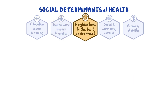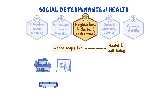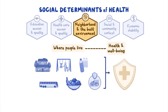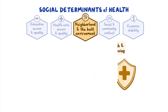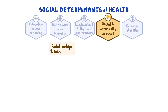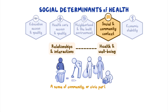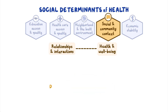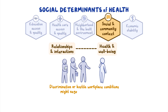Neighborhood and the built environment is the connection between where people live and their health. Improving access to and the quality of housing, transportation, and recreation areas can improve physical and mental health. Increasing the availability of healthy foods, air and water quality, and the safety of neighborhoods by reducing crime and violence also positively affects health. Social and community context includes relationships and interactions with family, friends, coworkers, and community members that can have a major effect on people's health. A sense of community or civic participation might positively affect health, but discrimination or hostile workplace conditions might negatively affect health.